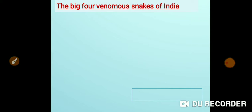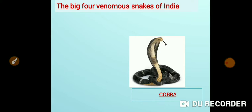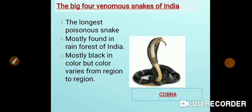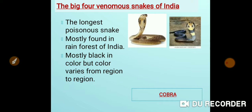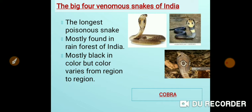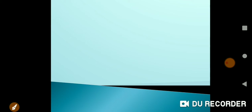First, let's study about the Cobra. It is the longest poisonous snake, mostly found in the rainforests of India. It is mostly black in color, but color varies from region to region - it can also be brown or light brown. You can identify a cobra by the mark on its fang - there is a distinctive mark on the cobra's fang.